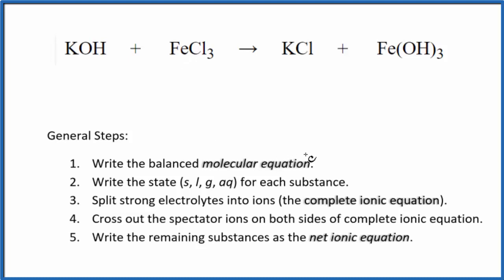So first we need to balance the molecular equation. We can see that we have three chlorine atoms here and just one here, so let's put a three in front of the KCl. Then we have three potassiums and only one here. We need to put a three in front of the KOH. We have these three hydroxides. That's okay because we have three hydroxides here, and then we have one iron and one iron. So this is the balanced molecular equation.